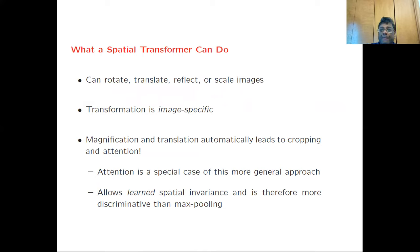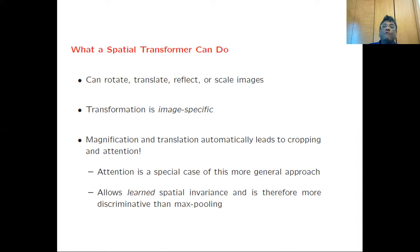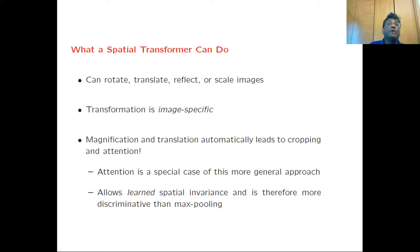Let's look at what the capabilities of the spatial transformer are before getting into the specific architecture. It can perform all kinds of linear transformations: rotation, reflection, scaling, and also translation. Note that translation technically is not a linear transformation, so you need to make some modifications to allow it. The transformation is specific to your data set and specific to the task — for example, image recognition or object recognition. The spatial transform module has parameters which are learned specific to a particular training data set, so it's data-driven.